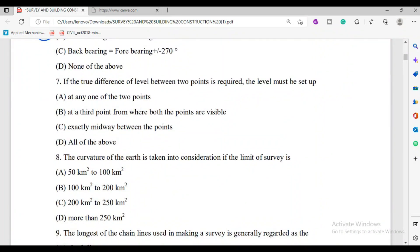If true difference of level between two points is required, the level must be set up. To get the true difference between two points, the level must be placed at which point? Obviously, at the midpoint, exactly midway. Suppose these two are station A and B. So we place the level at the midpoint. The distance L from A, the distance L from B. So option C is correct.